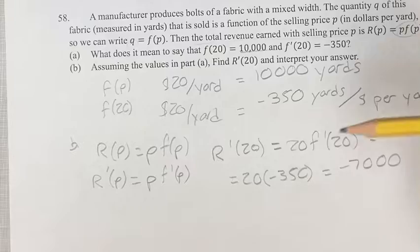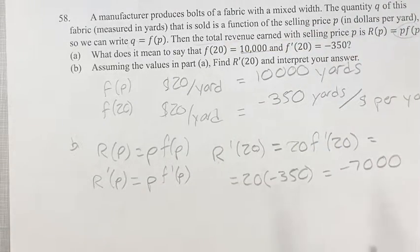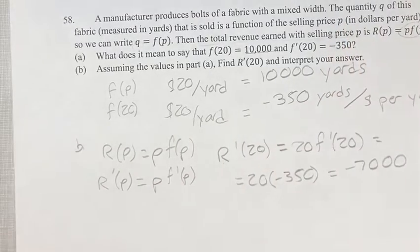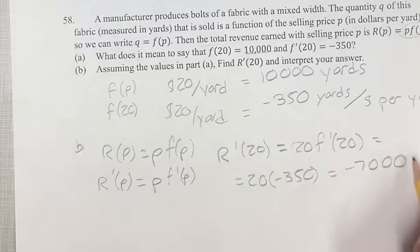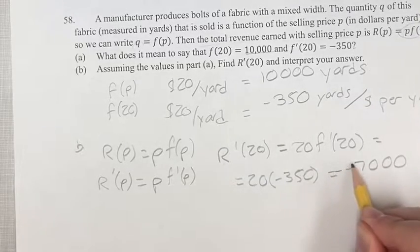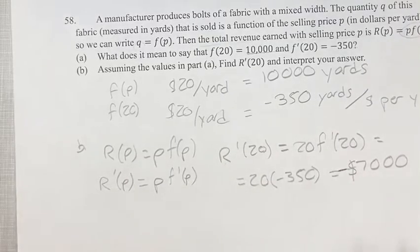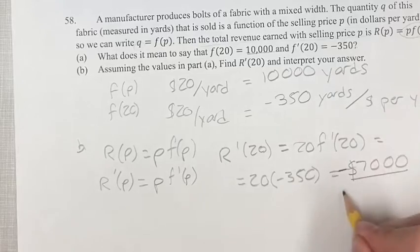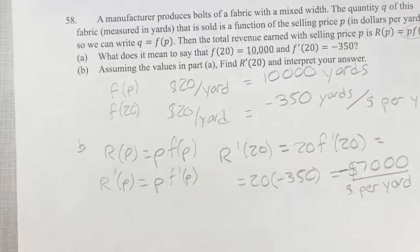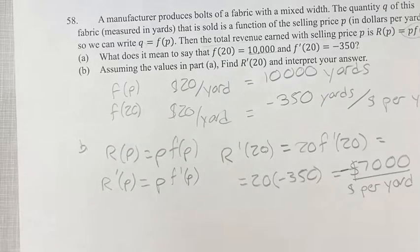And this is the rate of change of R, which is the total revenue, over change in P, which is the selling price. So it's negative $7,000 - it's a little weird to write negative money, but negative $7,000 per change in dollars per yard. So this is for part B, we found A and B. As always, thank you for liking and subscribing, and I'll see you in the next video.